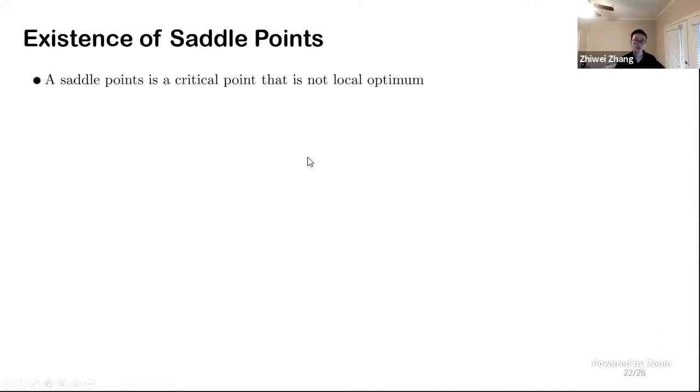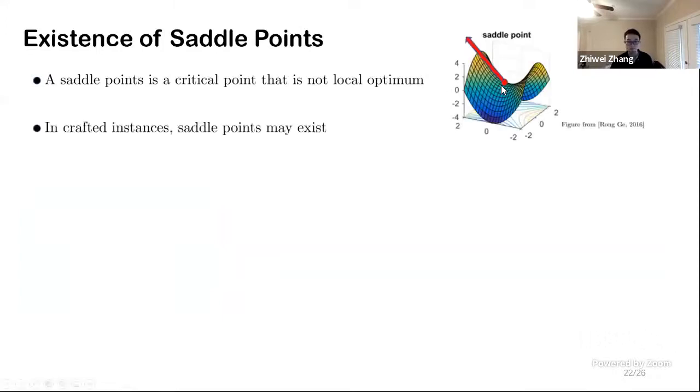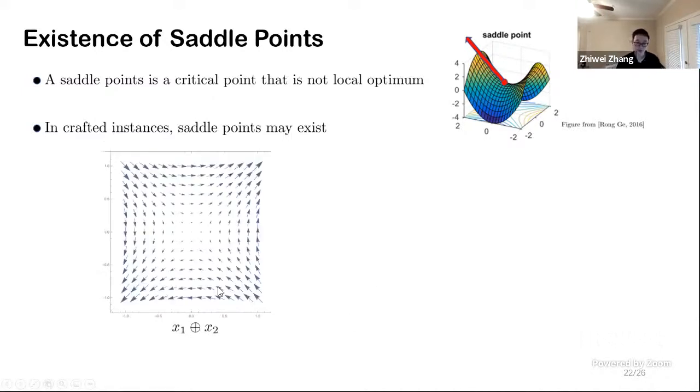The reason this gap exists is because of a saddle point. A saddle point is a critical point that is not a local optima, like this one. Although in real-life cases, saddle point rarely exists, but in some crafted instances, they can appear.